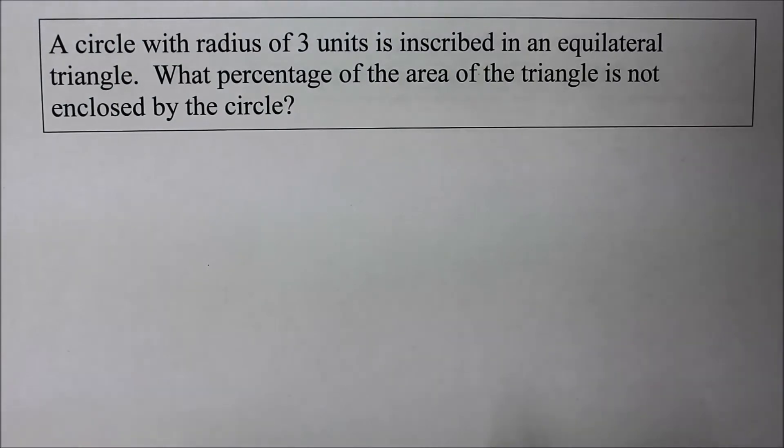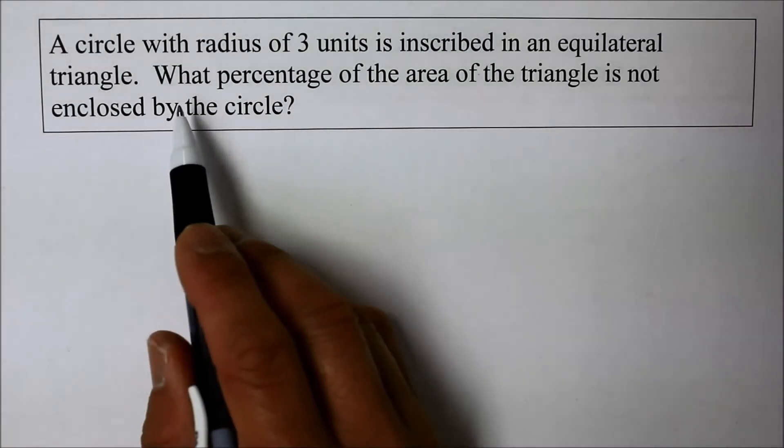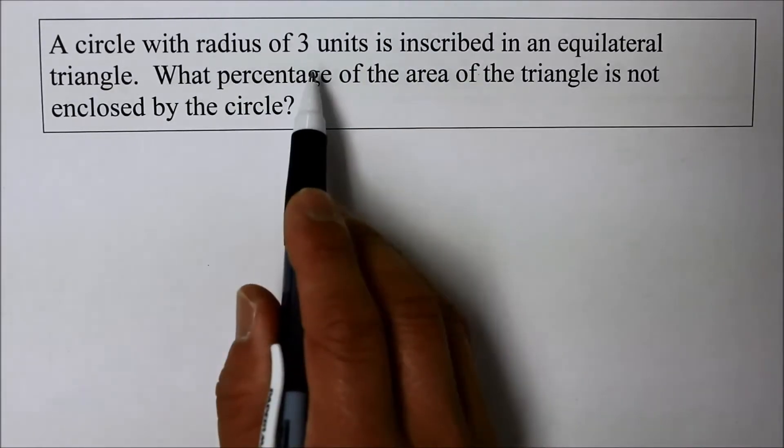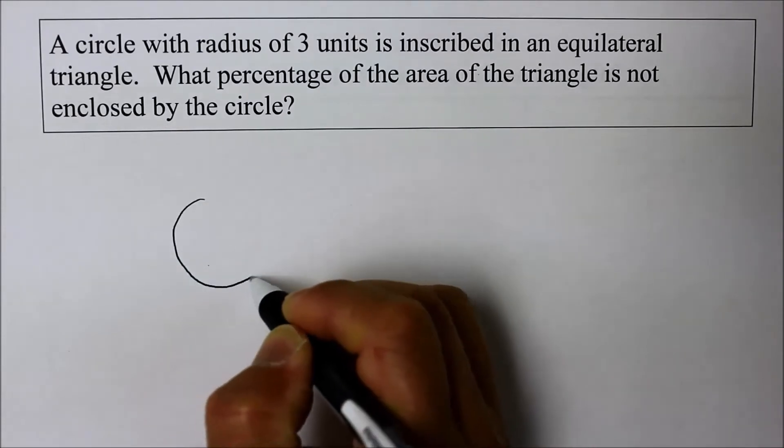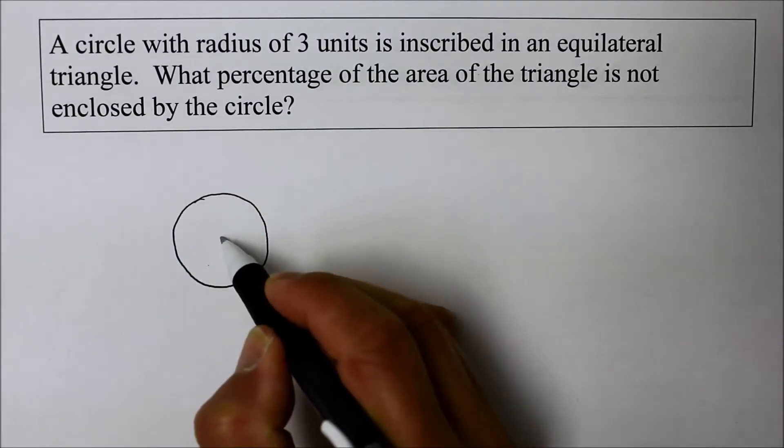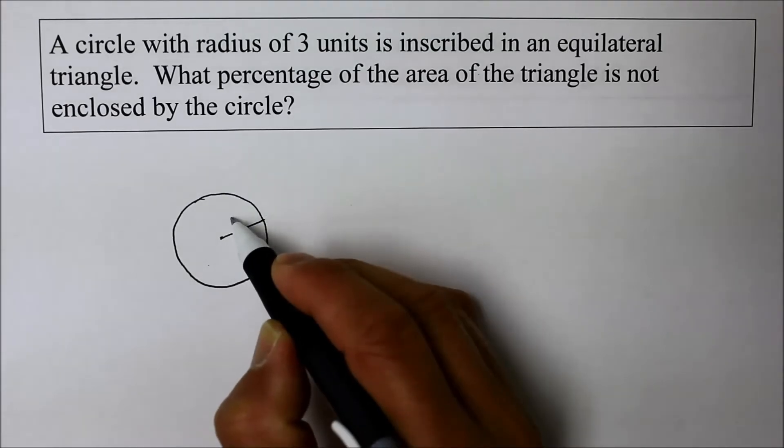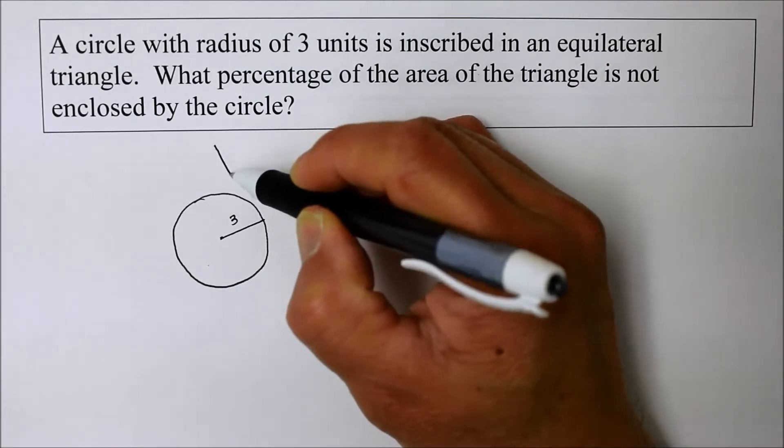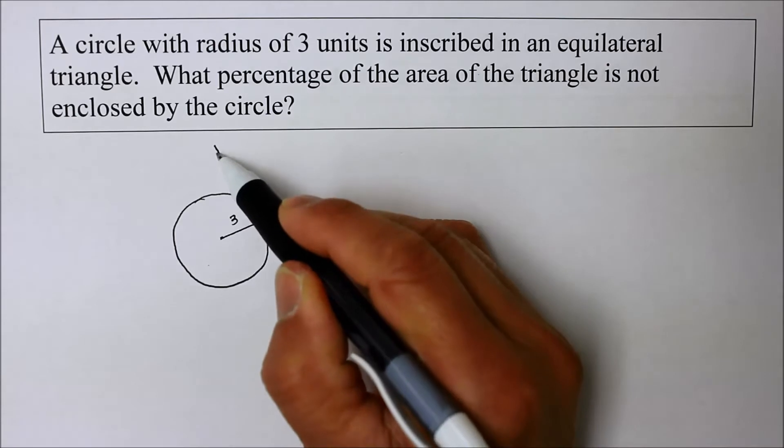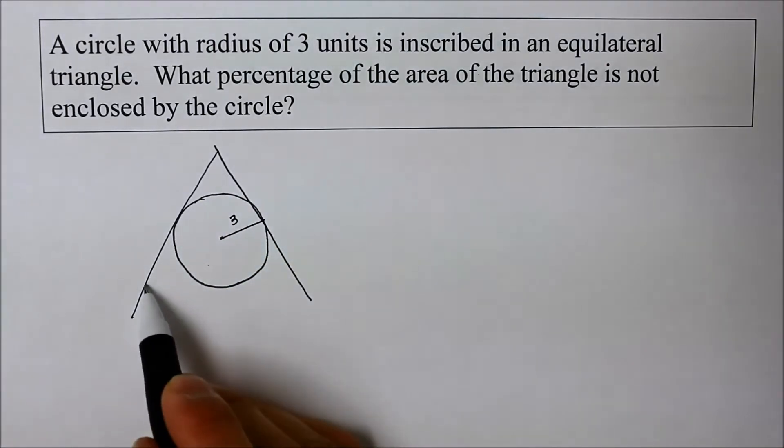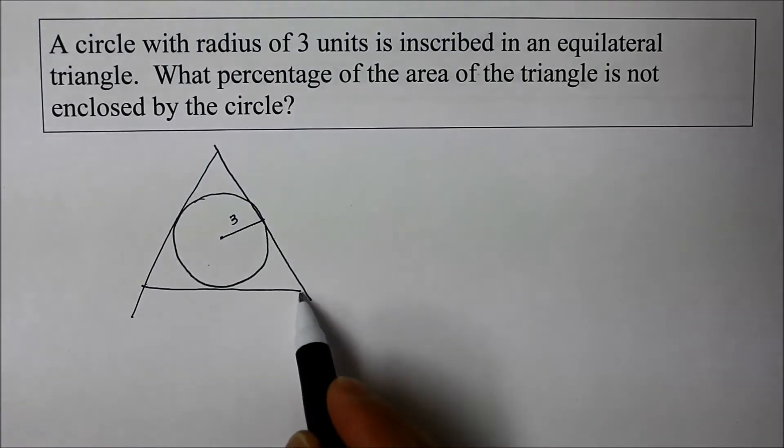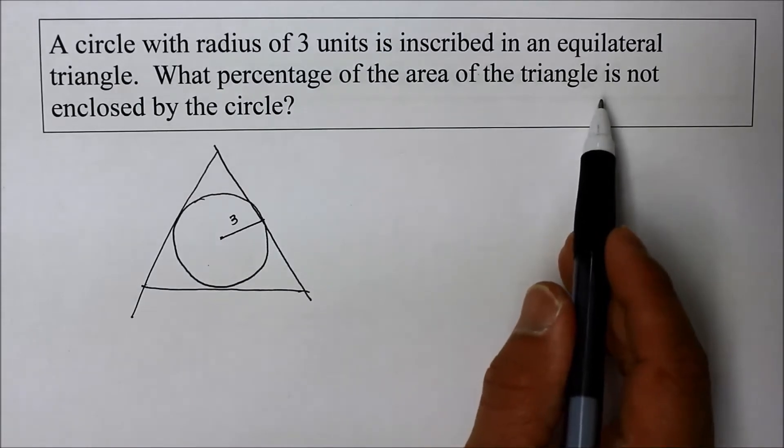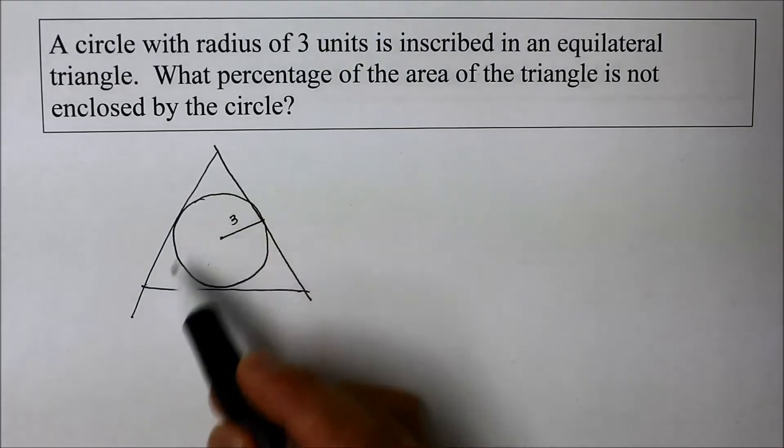Hi! This instructional video is about a circle that is inside an equilateral triangle and this circle happens to have a radius of three units. There's a circle first of all with the radius of three units and then we have an equilateral triangle. Let me draw it this way. I want that radius to mean something. So there. That kind of helps us to visualize what we're talking about. And the question is what percentage of the area of the triangle is not enclosed by the circle? This is enclosed so the outside is not.